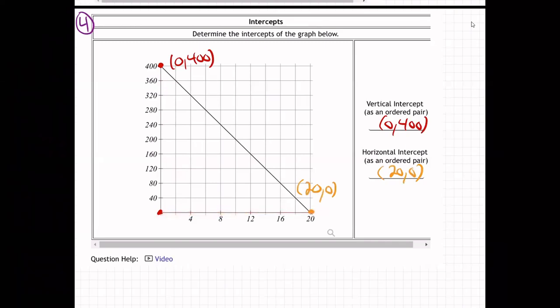These are intercepts. We call these intercepts where the graph intersects the vertical axis, the y-axis, or the horizontal axis, the x-axis. And that's all they want. Here we go.